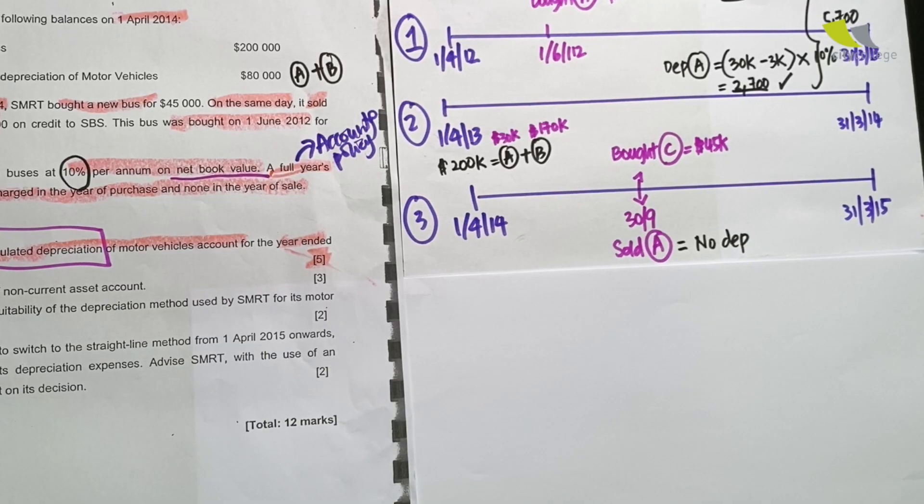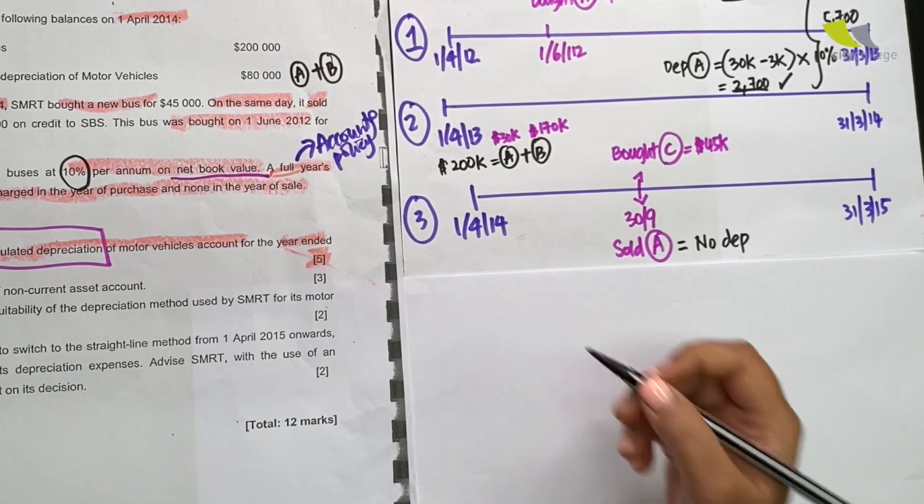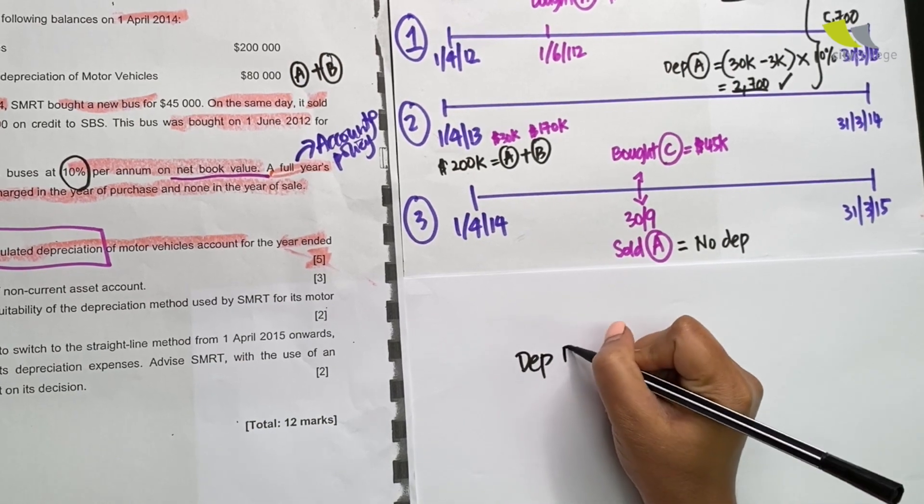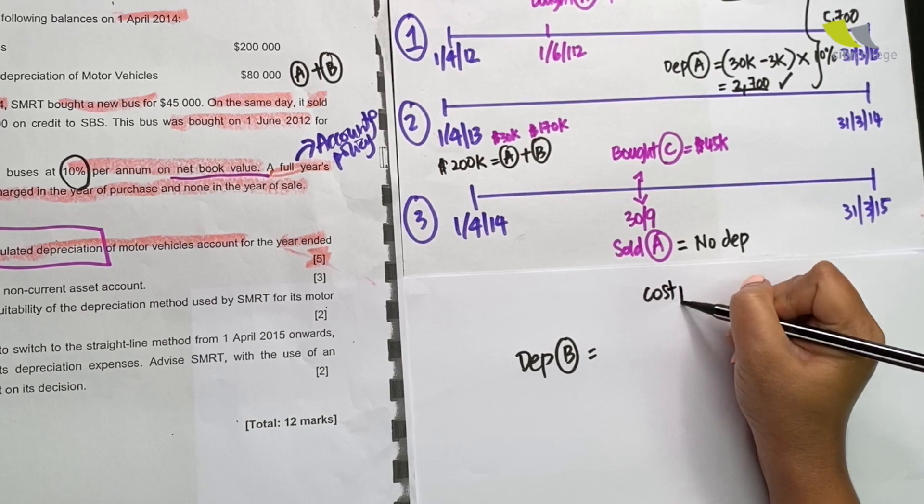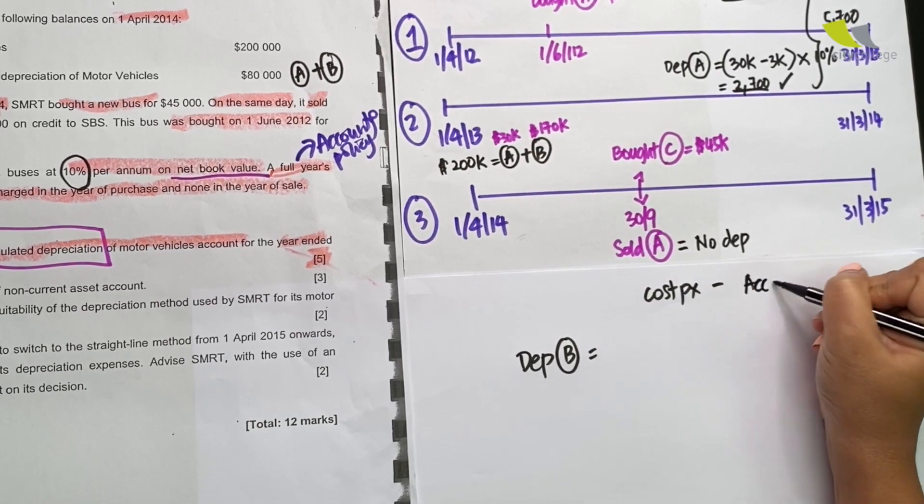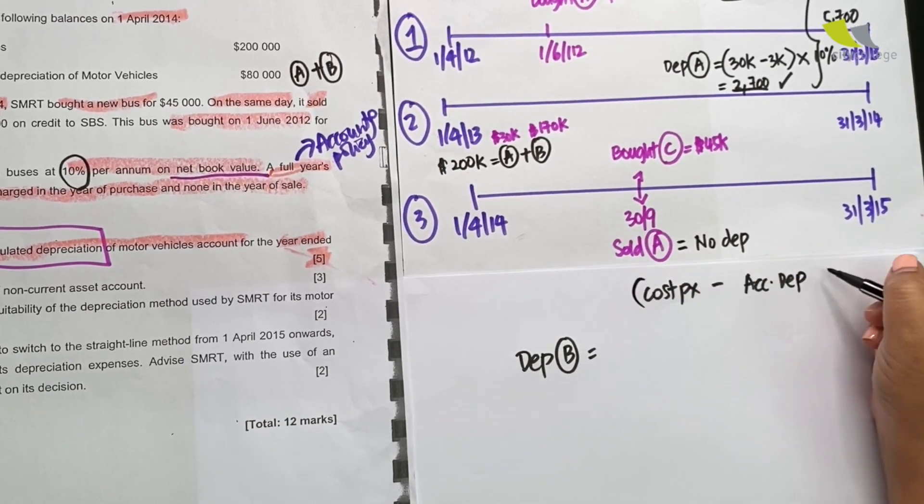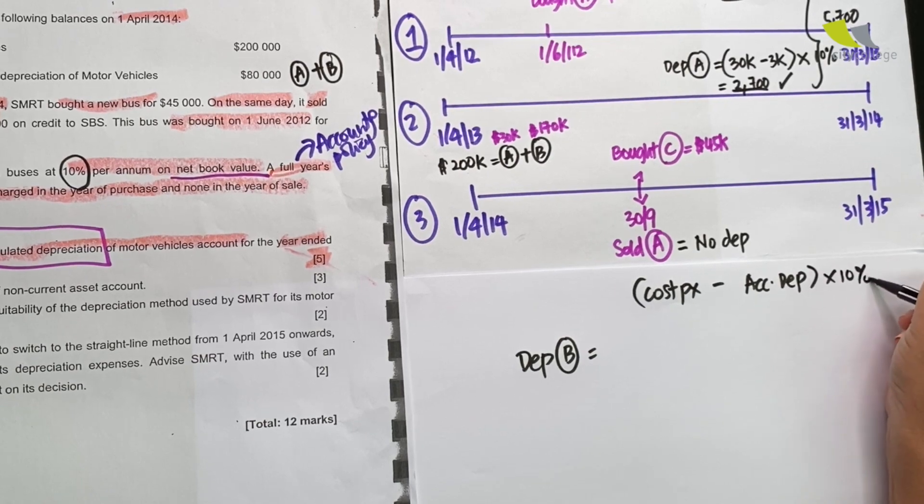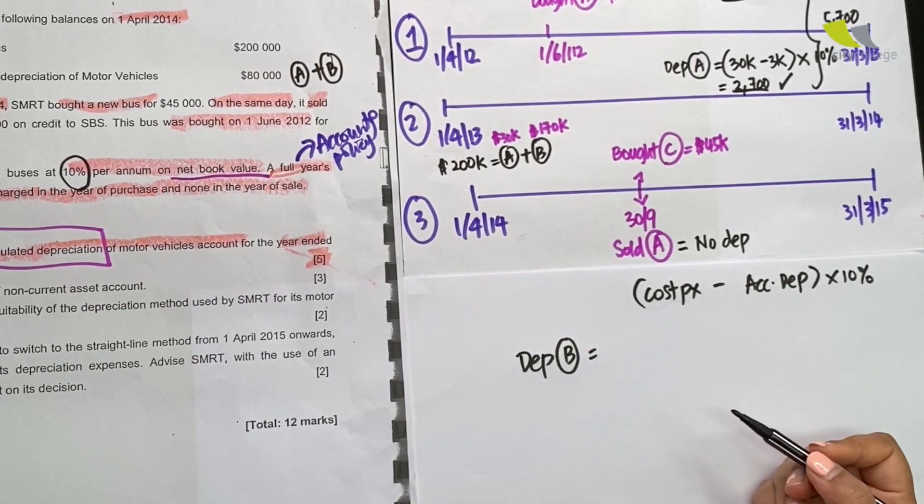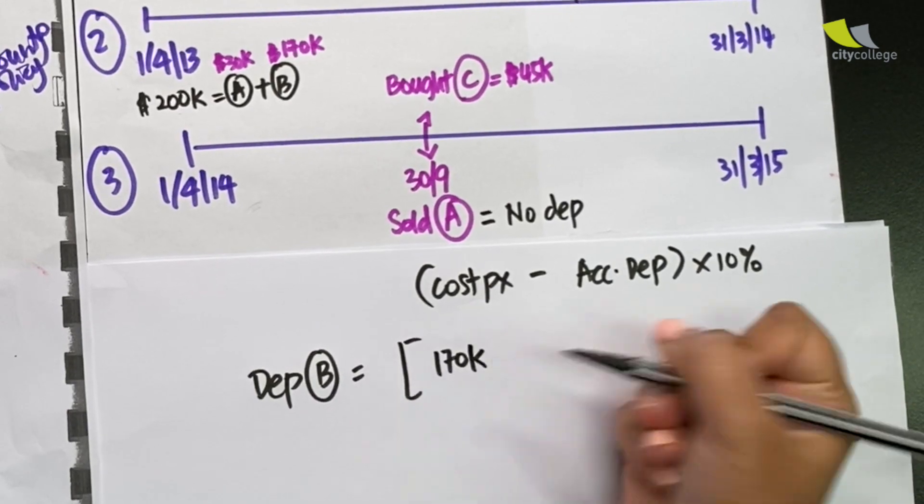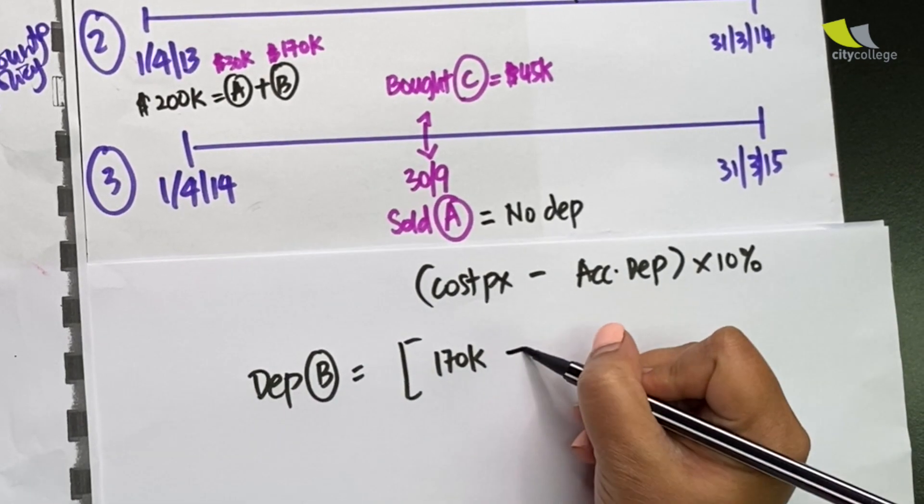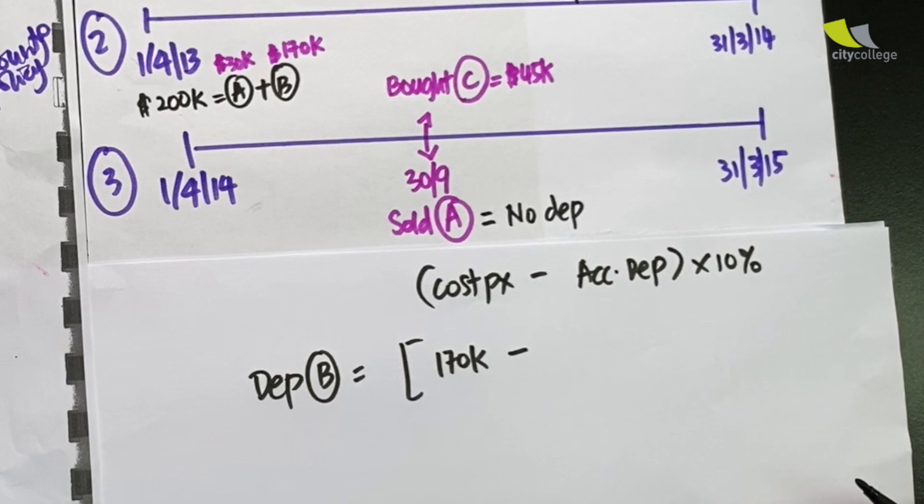So let's proceed to do the workings right now. We know that A has no depreciation. So let's calculate the depreciation for B. For that, we need to know the cost price of B followed by its accumulated depreciation before we multiply by the percentage. What is the cost price of B? We've discussed that the cost price is $170,000.